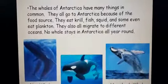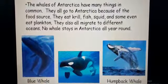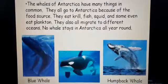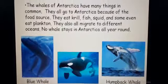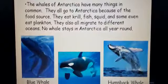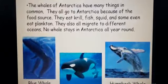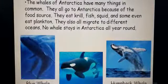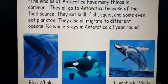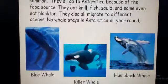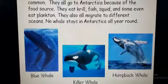We will read in detail about the animals found in this continent, because this information is not given in your book. The whales of Antarctica have many things in common — they all come to Antarctica because of the food source. They eat krill, fish, squid, and some even eat plankton, which is a kind of small organisms that fish feed on. Whales also migrate to different oceans; no whale stays in Antarctica all year round. They move to find better living conditions or better food.